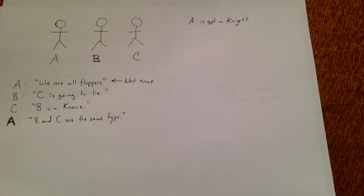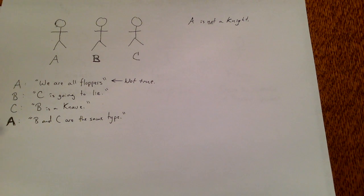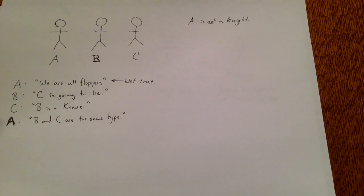Let's try to evaluate what we can see here. The statement that B and C are of the same type could be true, and it also could be false, so these are going to be some tricky statements to work through. If A is lying, then we get some information about B and C. And if A is telling the truth, we also get information about B and C. Therefore, let's test the cases of A's truth and falsehood.